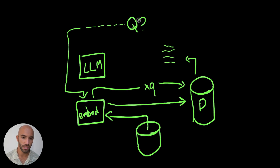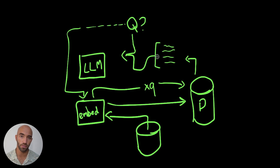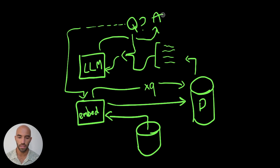We take our query vector and our context and put those together — queries and context — and that gives us a context or retrieval augmented prompt. We feed that into our LLM and now it can actually give us relevant, up-to-date information which it usually wouldn't be able to do. So let's actually dive into how we would implement all this.